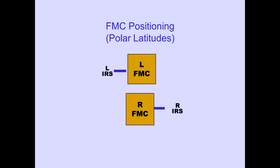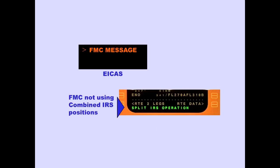When operating at polar latitudes, the FMCs will not use the combined IRS position. Each FMC will use the position of its respective IRS after GPS and radio DME refinements are lost. The FMS-CDU message 'Split IRS Operation' is displayed when FMC positioning is not using the combined three IRS positions. Each FMC utilizes a single IRS.